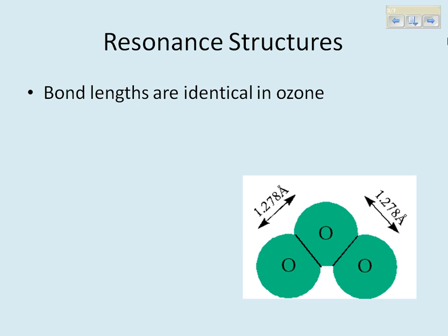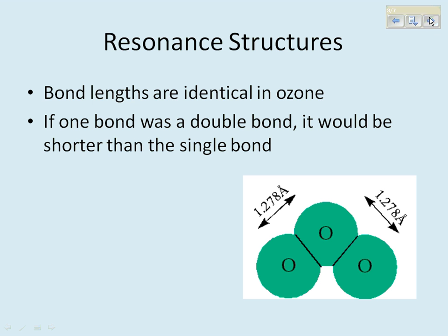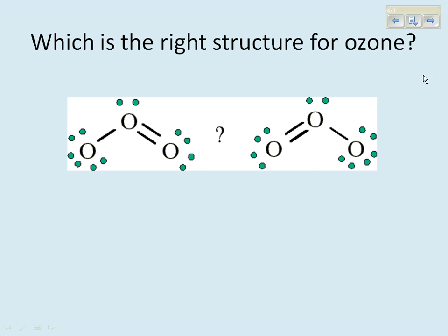When they look at some of these molecules that have Resonance Structures, they find that all the bond lengths are identical, in particular in ozone, which is O3. If one bond was a double bond and one was a single bond, the double bond would be shorter than the single bond. But when they measure it, they're identical, they're the same length. This is measured in Angstroms.